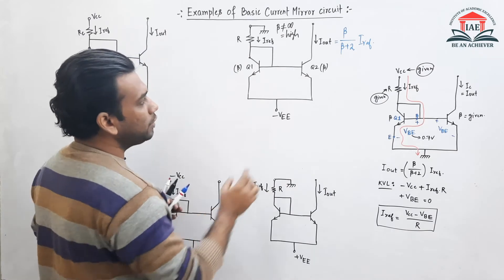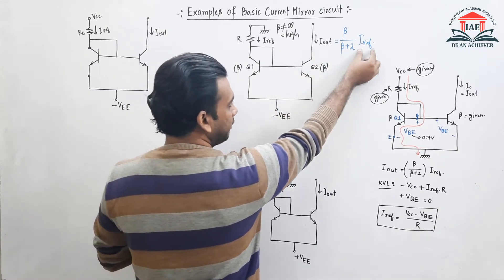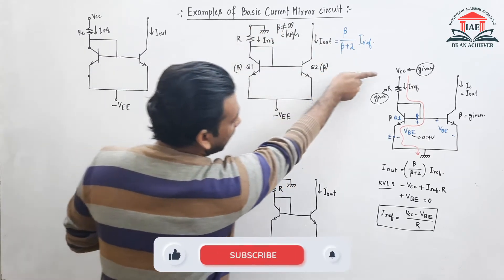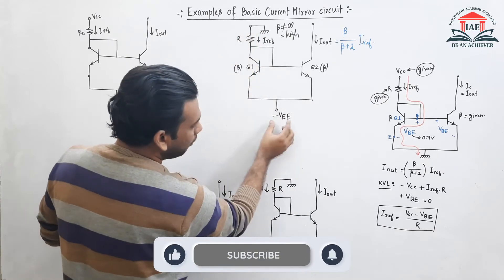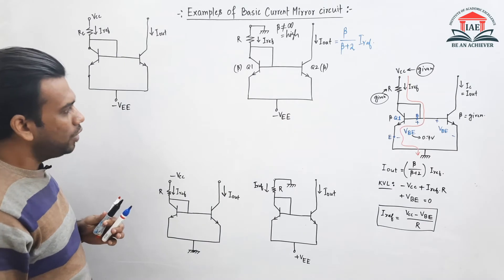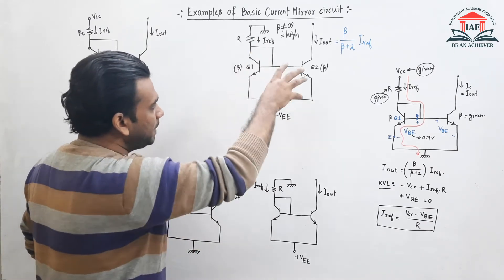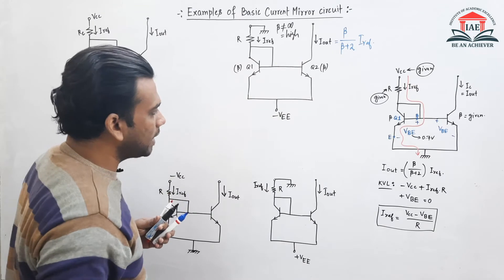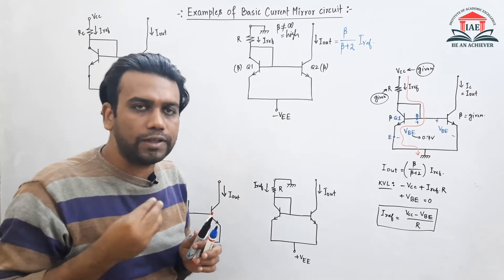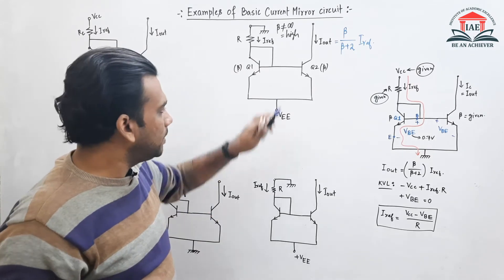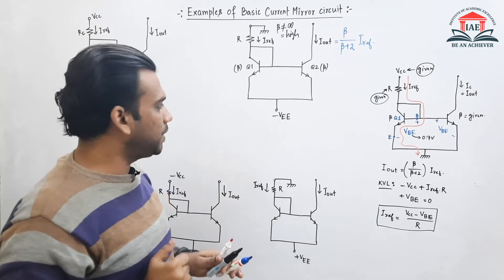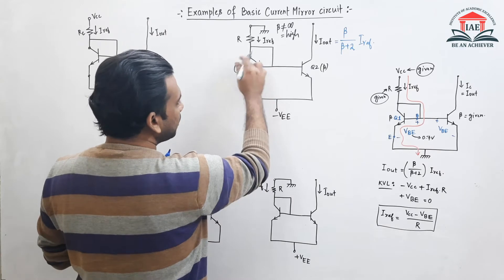To find the output current, we need to find the value of I reference. In this circuit we have VCC at the top and VEE at the bottom. The first requirement for a current mirror circuit is that both transistors Q1 and Q2 must operate in the active region. We check whether Q1 is in the active region.